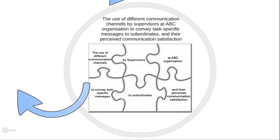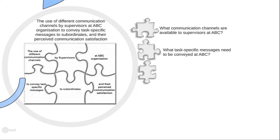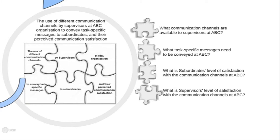When I start to formulate my problem statement and sub-problems, I start with this general idea — the big puzzle piece — and then extract the smaller pieces. The first might be: what communication channels are available to supervisors at ABC organization? The next: what are the task-specific messages that need to be conveyed? Then: what is subordinates' level of satisfaction with those channels? And: what are supervisors' satisfaction with the communication channels at ABC?